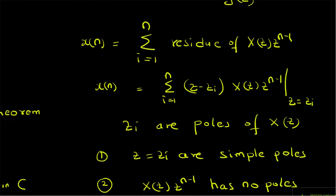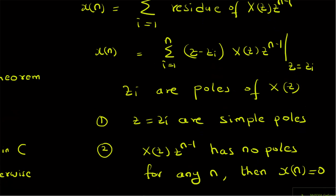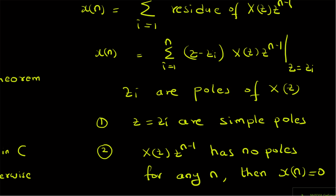There are two important points: Z_i are simple poles, and in the case where X of Z times Z power n minus 1 has no poles within the contour C for any given value of n, the value of X of n at that particular n will be equal to 0. Thanks for watching.